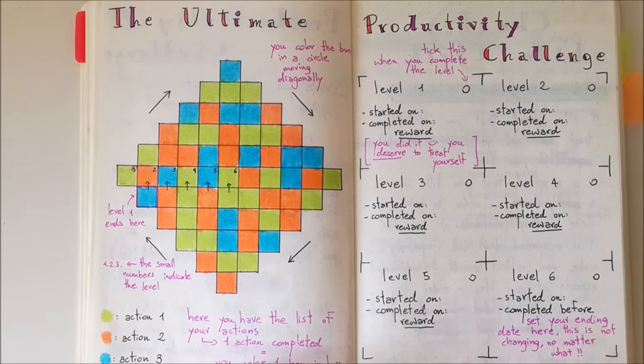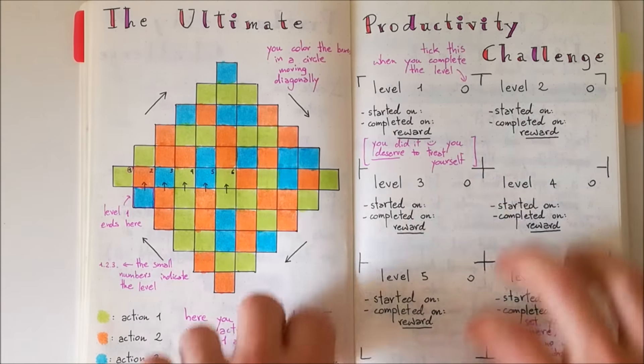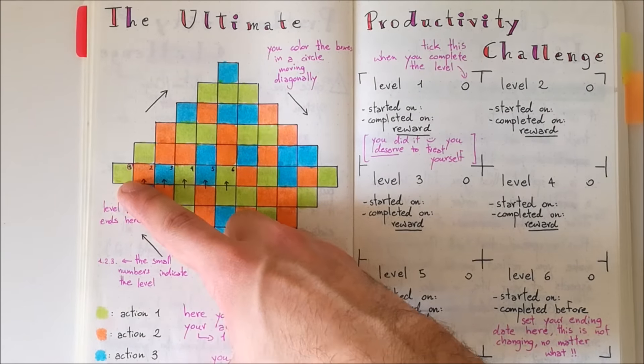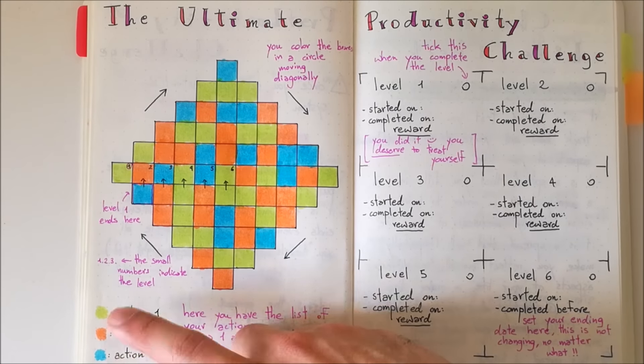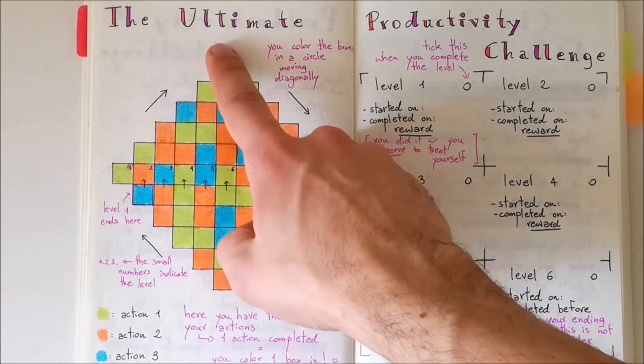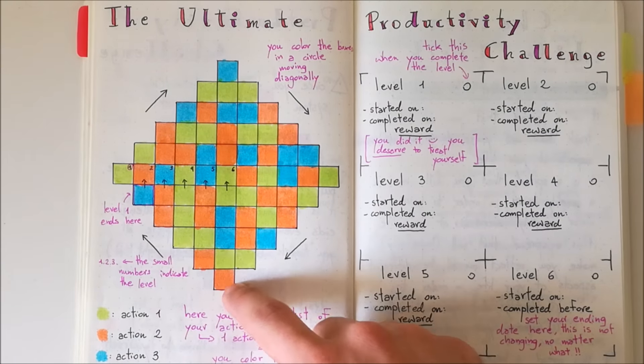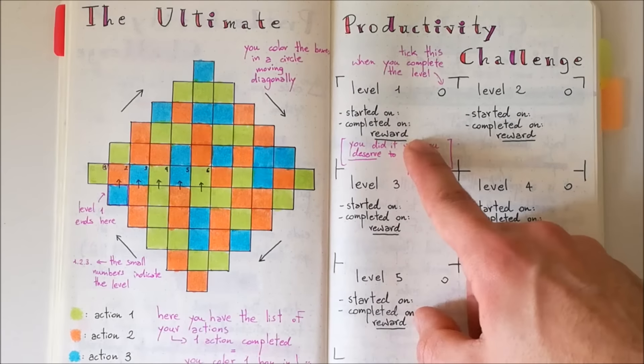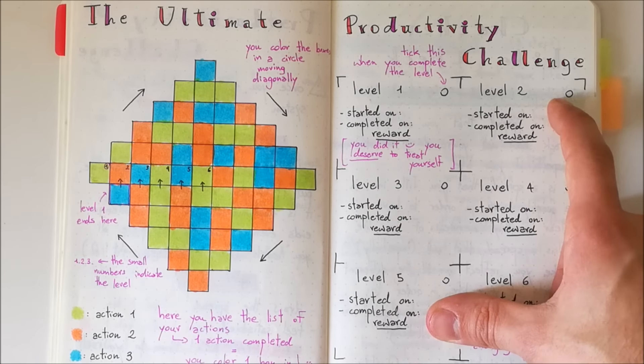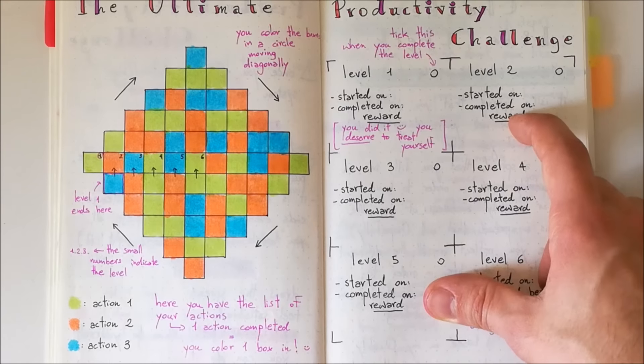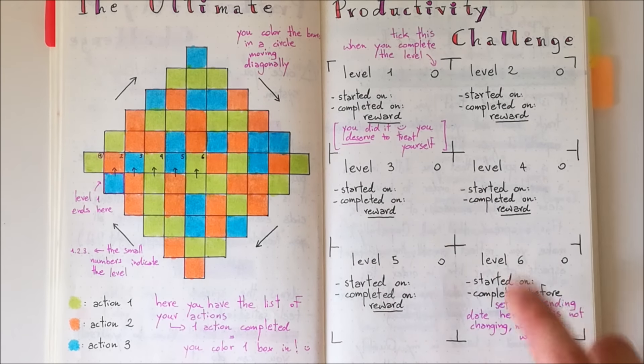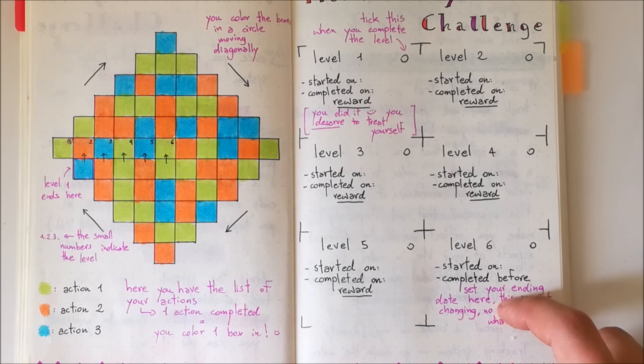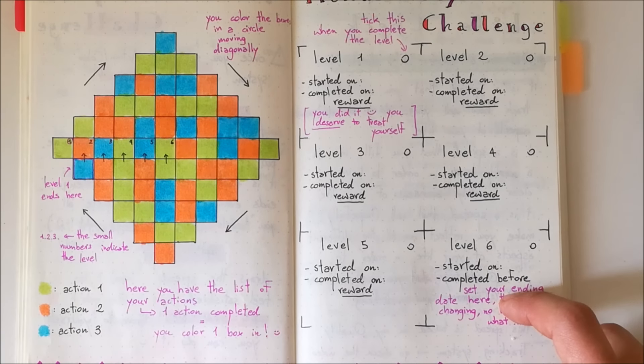Before moving to my bullet journal, I want to go over it once more. So what you do is that you start right here, you color the boxes in according to the actions that you set up down here, you go in circles around, according to the diagonal. When you get to the end of the level, you put the date here, you get your reward, you start your next level, you put the starting date right here and the reward. And you do the same for level three, four, five, till level six, knowing that the completed before date is something that you set up right at the beginning of your challenge.